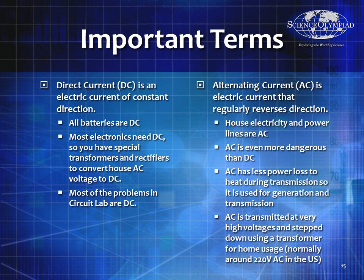Virtually all problems in CircuitLab will be DC. However, alternating current regularly reverses direction — the electricity that comes into your house is AC and is a sinusoid. AC is much more dangerous than DC, which is why many people get electrocuted. AC has less power loss to heat during transmission, so it's used for generation and transmission at very high voltages, going through many step-down transformers before reaching your house at around 220 volts AC in the US.